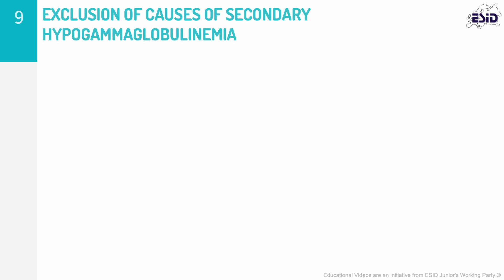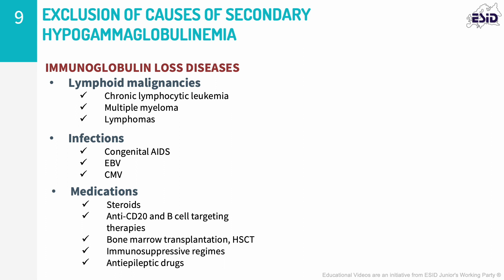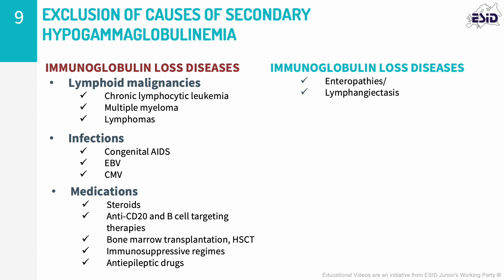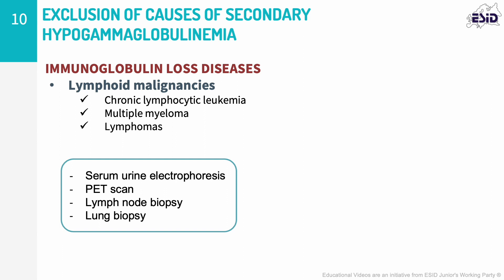CVID is a diagnosis of exclusion. Therefore, other causes of hypogammaglobulinemia must be ruled out, like secondary failures of immunoglobulin production in the context of lymphoid malignancies, infections, or due to certain medications, including B-cell depleting agents like rituximab or even chronic steroid use. Low immunoglobulin levels can also be secondary to immunoglobulin loss in protein-losing enteropathies or severe proteinuria. Lymphoid malignancies must be excluded, especially given the high prevalence of reactive lymph nodes, and a biopsy for histological evaluation may be warranted.